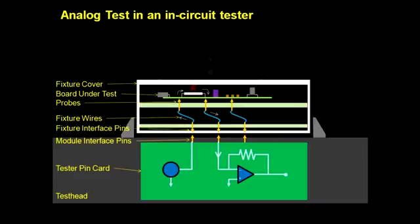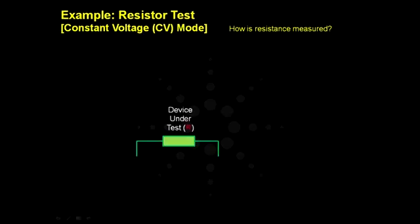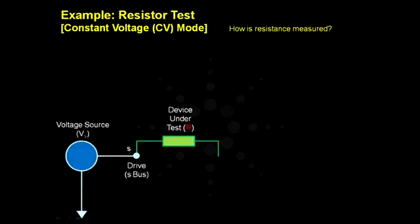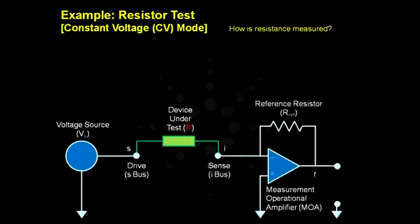Let's start with an example of a resistor test setup using a constant voltage source. The resistor is connected between the voltage source Vs on the drive or the S bus and the measurement op-amp on the sense or the I bus.